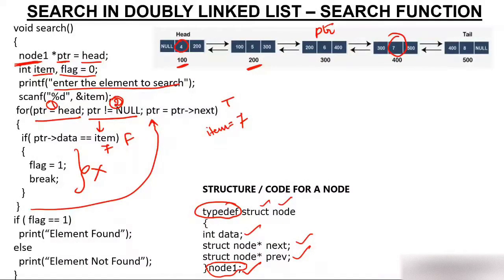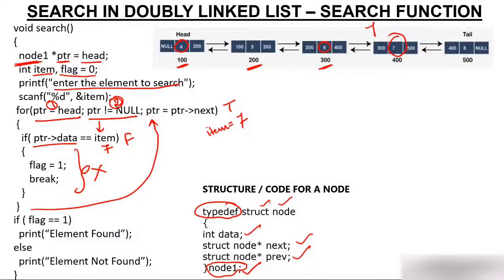Again you check: is PTR not null? PTR is 300, so condition is true. You move inside and check PTR data. PTR data is 6. Is 6 equal to 7? No, condition is false. You do not move inside the if block. You update PTR again: PTR gets PTR next, which is 400. PTR moves to address 400.